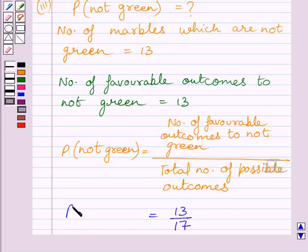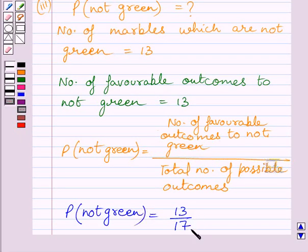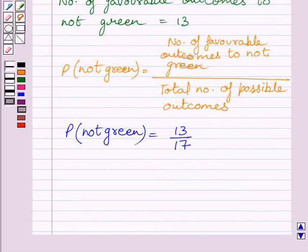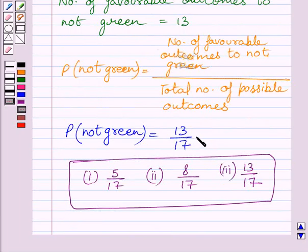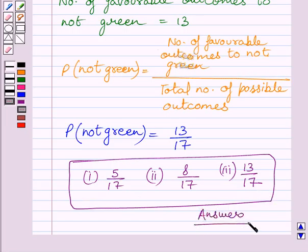So we get probability of getting not green marble equals number of favorable outcomes to not green upon total number of possible outcomes. Number of favorable outcomes to not green is equal to 13 and total number of possible outcomes is equal to 17. So probability of getting not green marble is equal to 13 upon 17. This completes the third part and these are the required answers for the three parts. This completes the session. Hope you understood the solution. Take care and keep smiling.